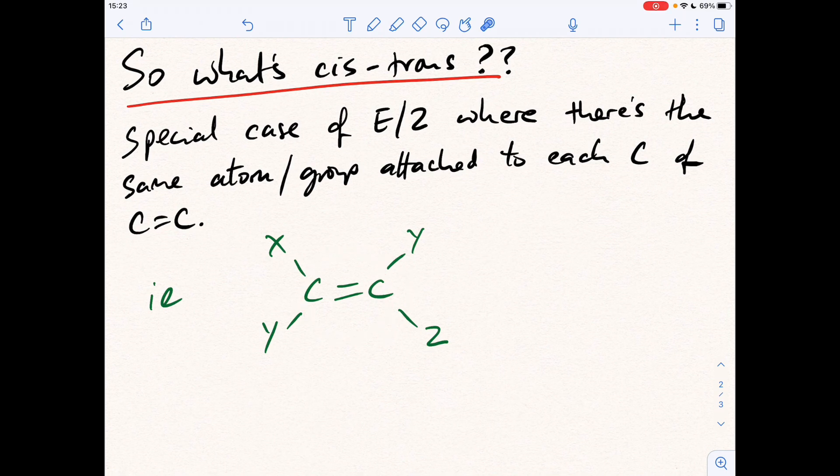Remember, for E/Z to be possible, it's a special type of E/Z, so that's got to be different to that, that's got to be different to that. But in cis-trans, you'll notice that we've got Y on the left-hand carbon and on the right-hand carbon. So what we're doing in cis-trans is we're comparing the relative positions of the identical group across the double bond.